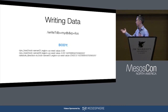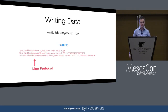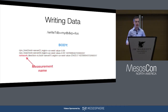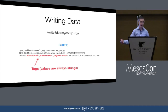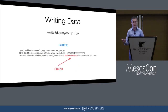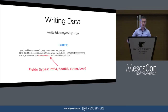Here's what the POST to the write endpoint looks like. We created a line protocol to represent time series data. The structure of the data as you feed it in: you have a measurement name, which is a string; you have tags, which are key-value pairs where the values are strings — this is metadata that we index; and then you have fields. Fields are key-value pairs where the value can be a bunch of different types: int64, float64, strings, or bools.